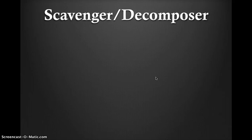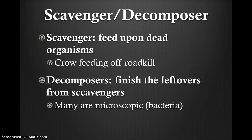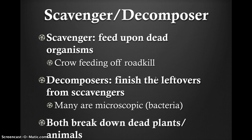Some animals eat dead animals or carrion — they are called scavengers. They help break down or reduce organic material into smaller pieces. These smaller pieces are then eaten by decomposers. Decomposers eat dead animals and break them down into chemical parts. Nitrogen, carbon, and other nutrients can then be used again by plants and animals. Without decomposers and scavengers, the world would be covered with dead plants and animals.